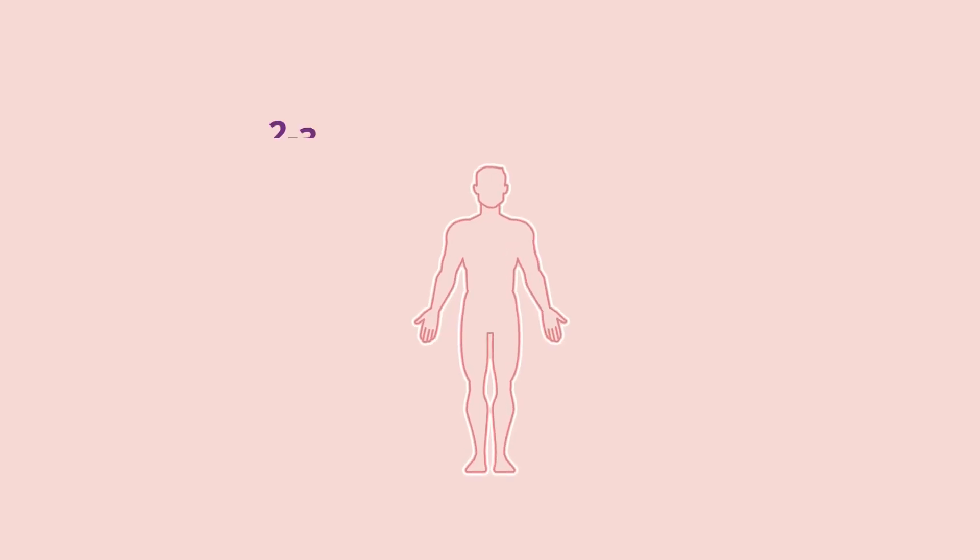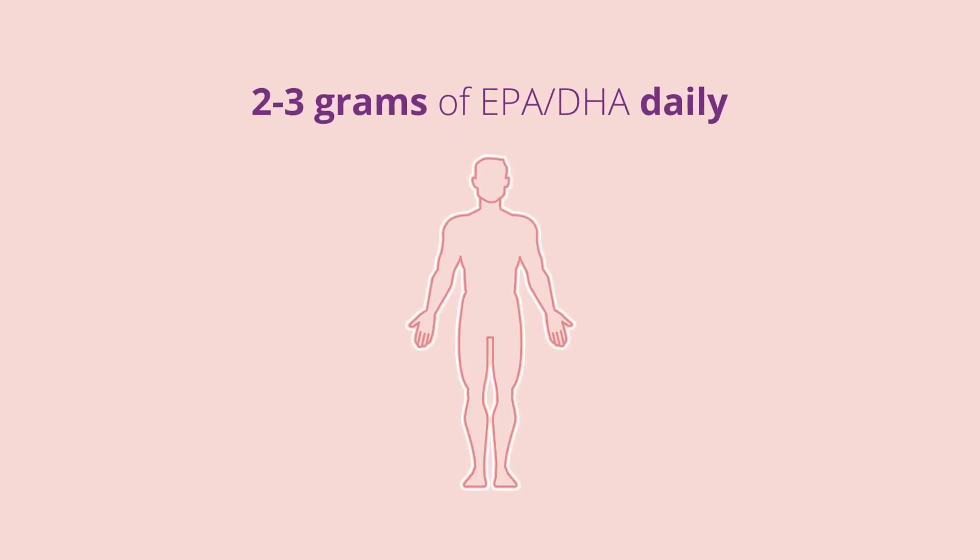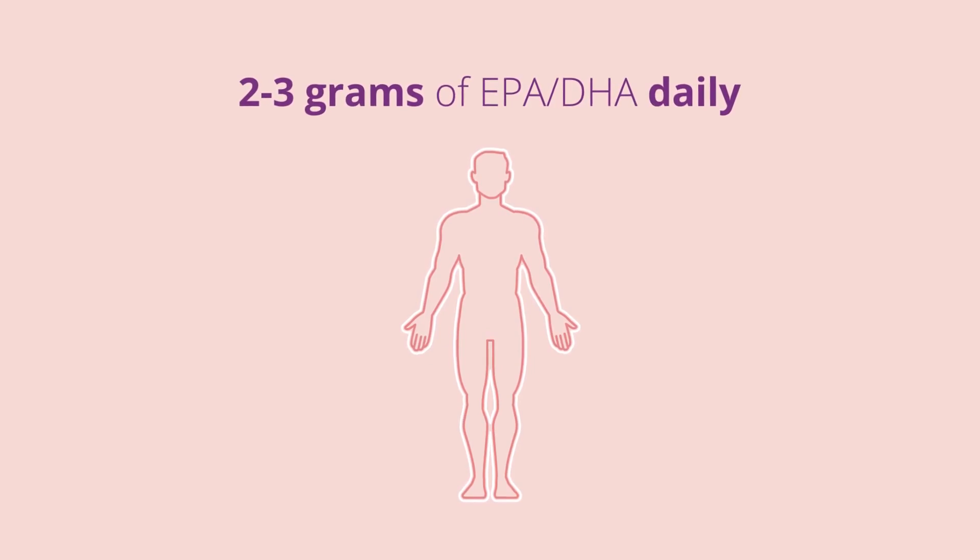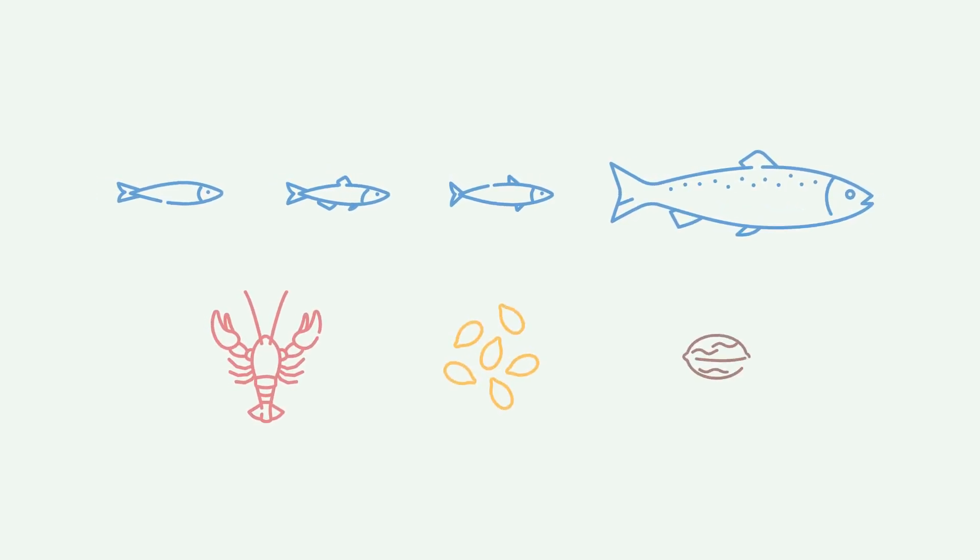Sound simple? To reap the health benefits, adults need about 2 grams of EPA and DHA daily. It might not seem like a lot, but do you eat at least one serving of sardines, anchovies, mackerel, salmon, shellfish, flax seeds, or walnuts on a daily basis?